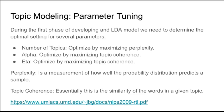Topic coherence tries to measure the similarity of words assigned to a given topic. The similarity scores are summed, and the goal is to maximize that total.